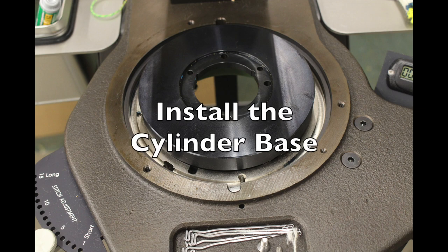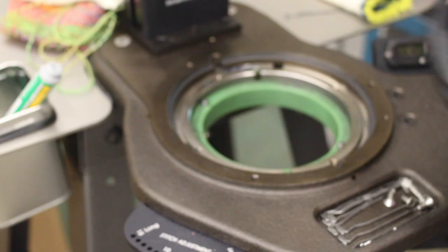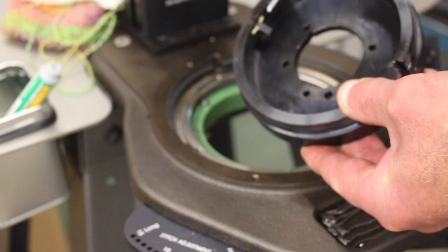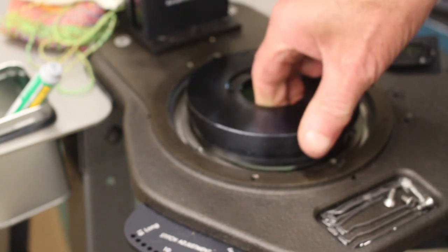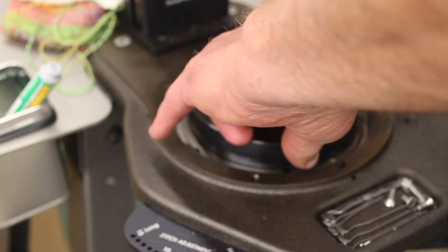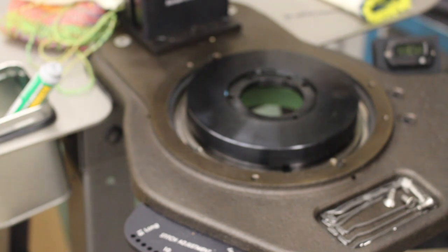Install the cylinder base by lining up the slots on the bottom of the base to the cylinder stop pins. Either pin lines up with either slot. Check that the pins are fully inserted into the cylinder base by holding down the base while pushing up on the two pins from below.